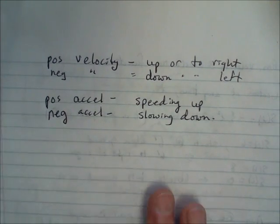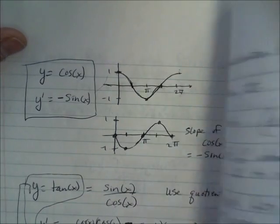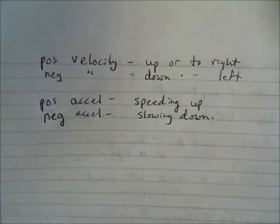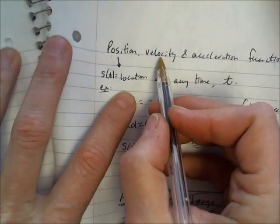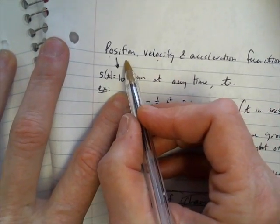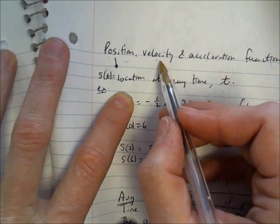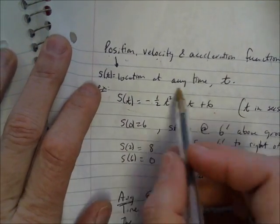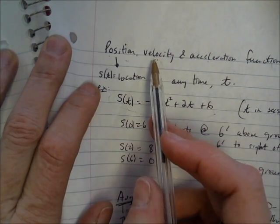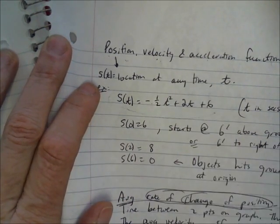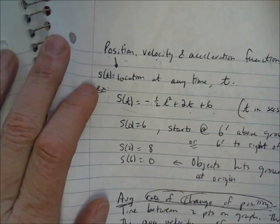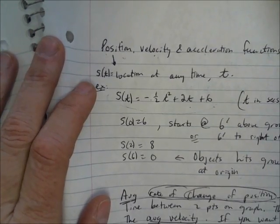We'll have a lot of examples to work through in class tomorrow, but I just wanted to introduce you to position, velocity, and acceleration. Velocity is the derivative of the position function, and acceleration is the derivative of the velocity function. Given a position function, we can find velocity and acceleration at any time t.